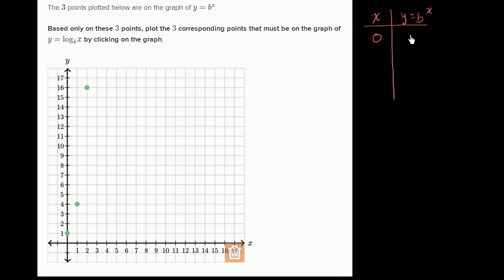When x equals 0, y equals 1. That's this point right here. When x equals 1, b to the first power equals 4, so y equals 4.